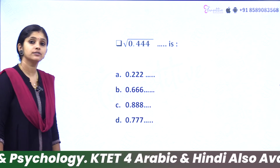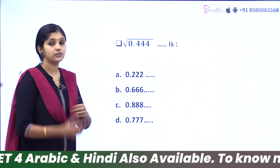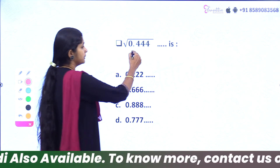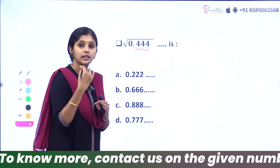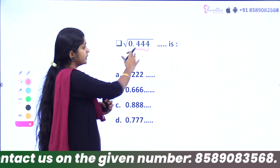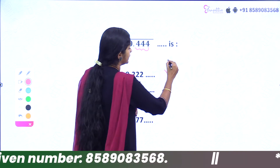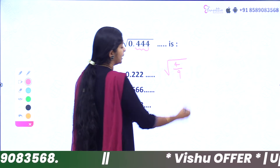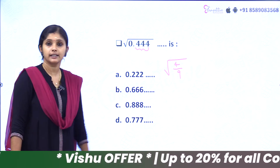The next question: the square root of 0.444. What is that? How do we do this? We will convert the repeating decimal 0.444... to a fraction. We can write the number and repeat in this. We write it as 4 by 9.